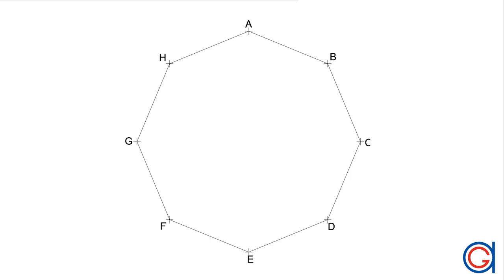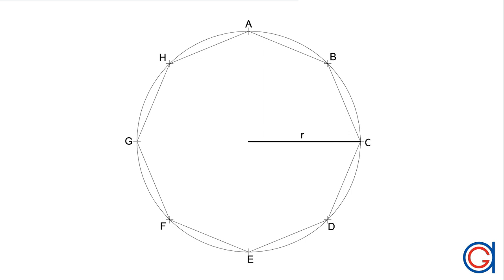So the first step is we are going to draw a regular octagon. There are two methods to draw regular octagons. One method is by knowing the length of one side — click this link and it will give you a full description on how to draw it. The second method is drawing an octagon inscribed in a given circle — again, click this link for a full description.